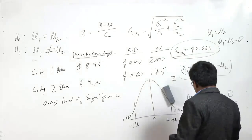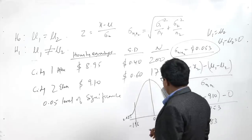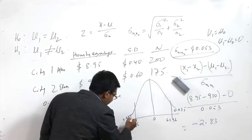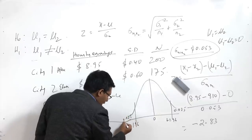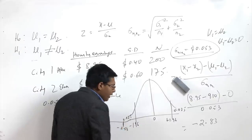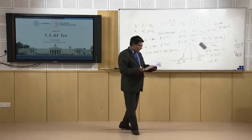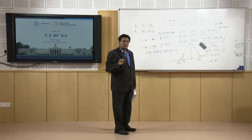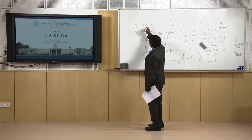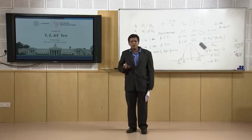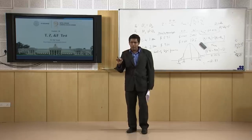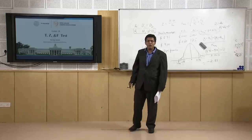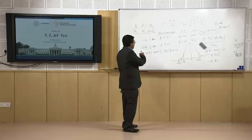Calculating this, the Z value comes to –2.83. Minus 2.83 falls to the left, beyond the critical region of –1.96. Since it is much further away from the critical zone, the null hypothesis is to be rejected. We accept the alternate hypothesis: mu1 is not equal to mu2, and there is a significant difference between the earnings of the two cities.